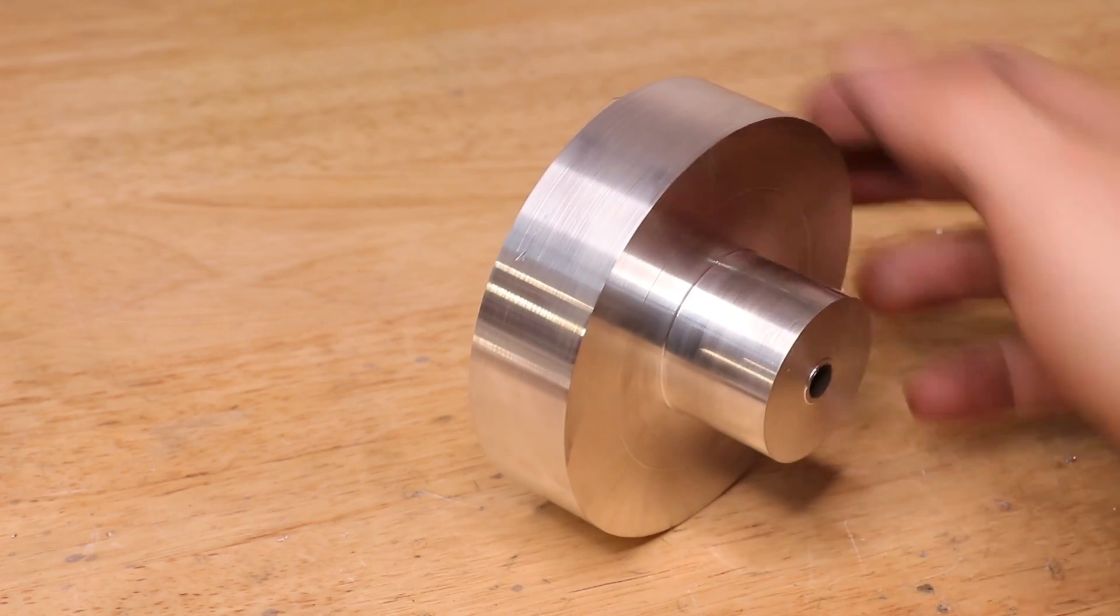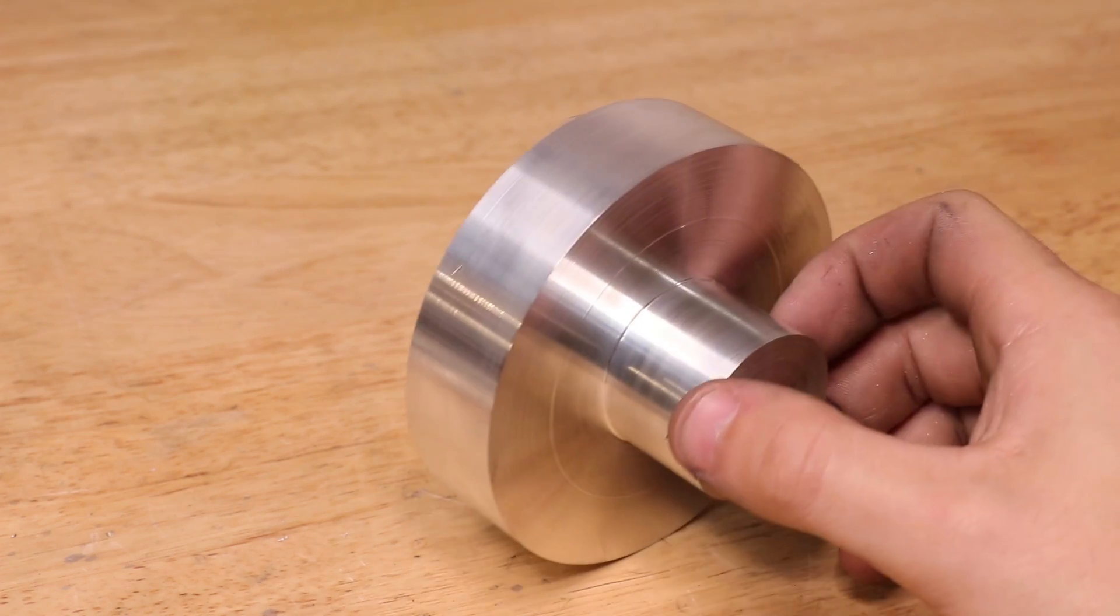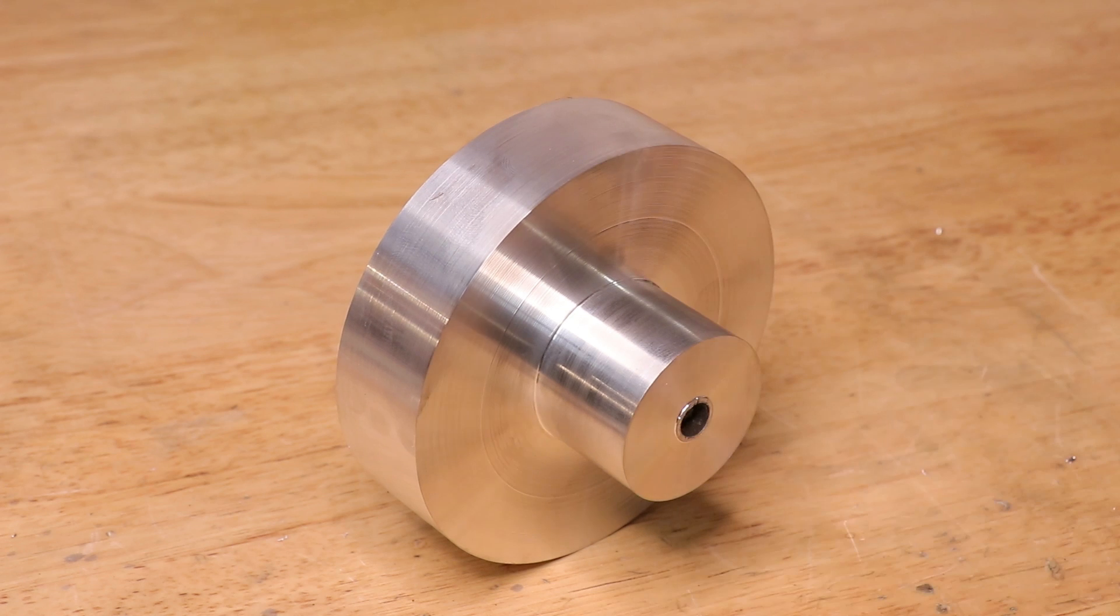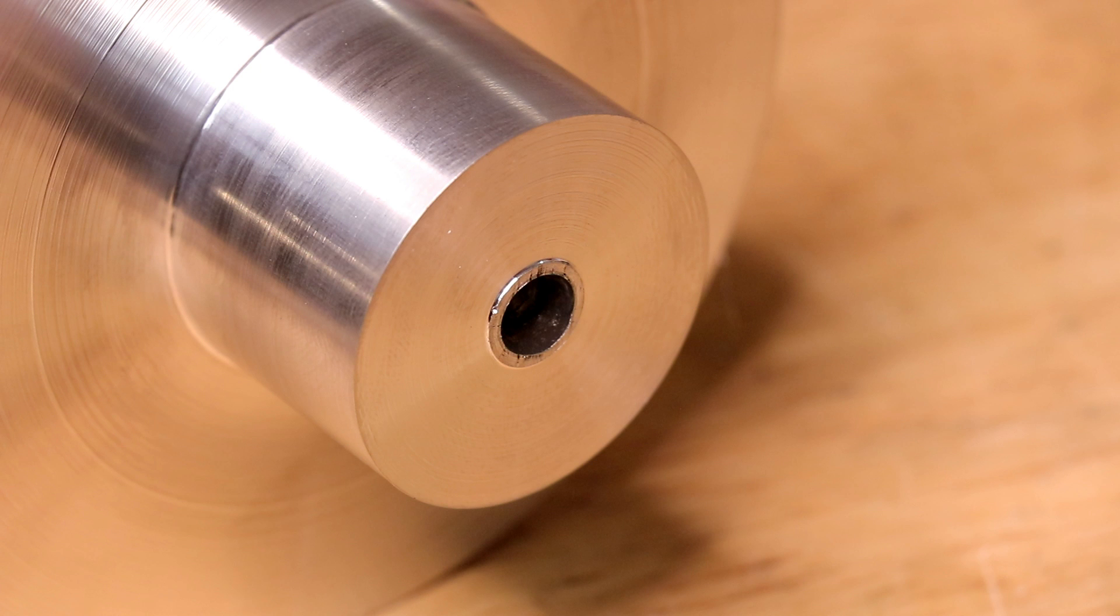And that's the first side done. I was very impressed with this method. However, if I was regularly turning between centers, I would rather invest in a faceplate or a drive plate than use the chuck jaws. The biggest disadvantage to turning between centers is that the area near the centers can't be turned. However, this area will be removed when I drill it out.